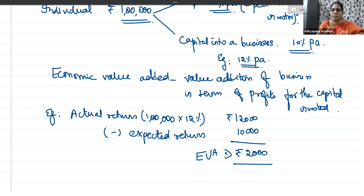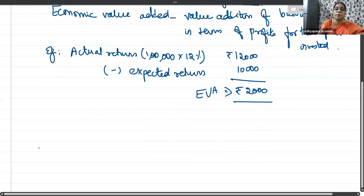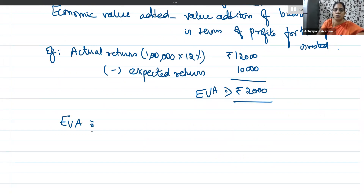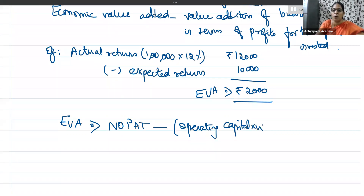In Economic Value Added, the logic is simple, but there is a set of computational procedures. The formula for EVA is: Net Operating Profit After Tax minus Operating Capital multiplied by Weighted Average Cost of Capital. When capital is invested into a business, it can be a combination of debt, preference, and equity, in which case the Weighted Average Cost of Capital determines the expectation of investors. The expectation of all investors put together is what we call WACC.